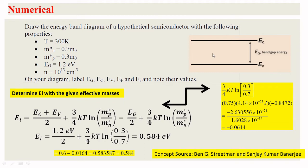Since EI is roughly at the center, I write (EC + EV)/2 as EG/2. So the formula becomes EI equals EG/2 plus (3/4)KT times the natural logarithm of 0.3 divided by 0.7.